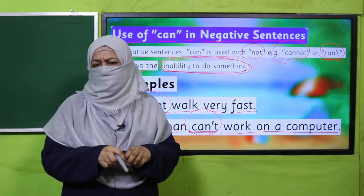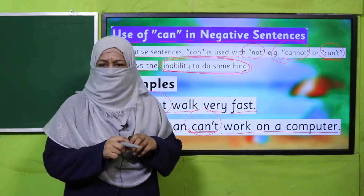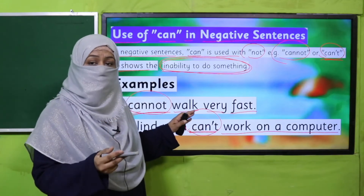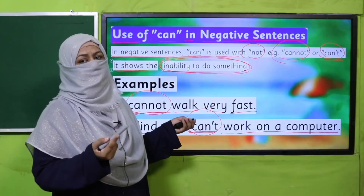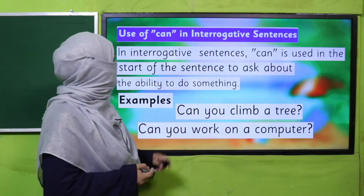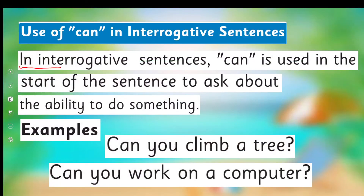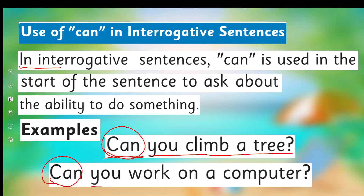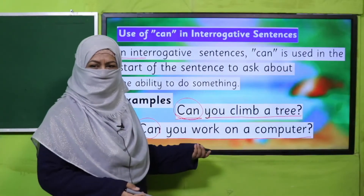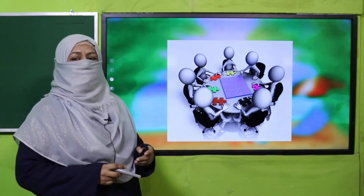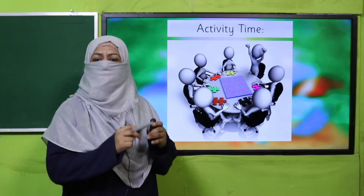If we want to ask about someone's ability, we use 'can' at the start of the sentence. For example: 'Can you climb a tree?' — meaning have you learned it or do you have the skill? 'Can you work on a computer? Yes, I can.' This is how we use 'can' and 'cannot' — can to show ability, cannot to show inability.